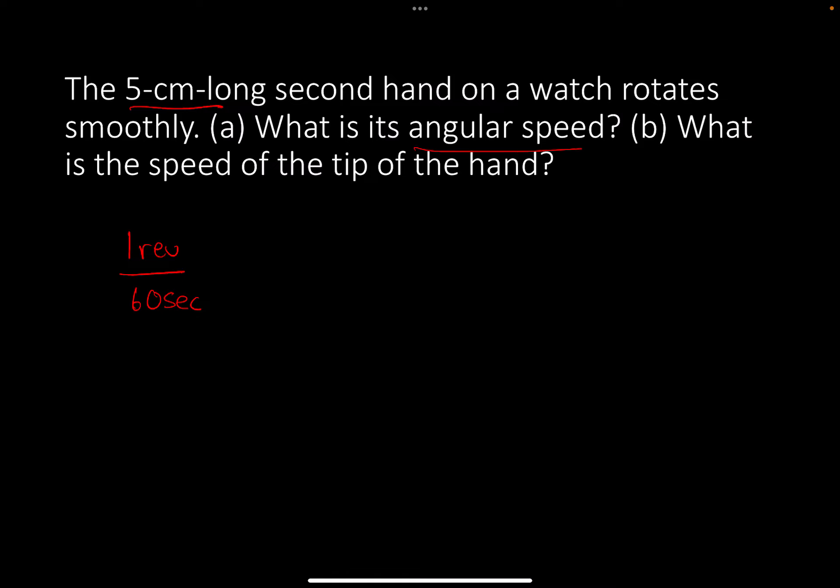It goes through one revolution every 60 seconds. The question is, what's the angular speed? I need to convert revolutions into radians per second. One revolution equals 2π radians. The revolutions cancel, and that's how you solve this problem. That's question A.